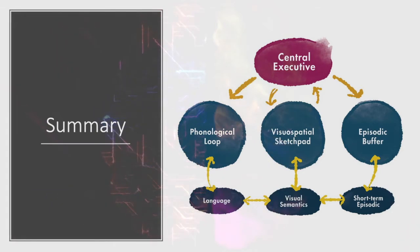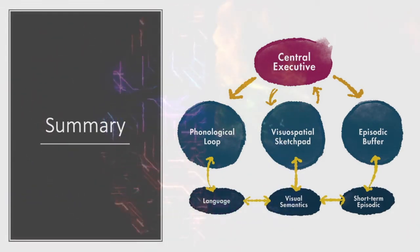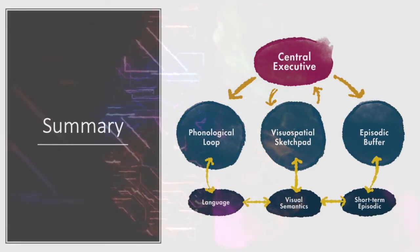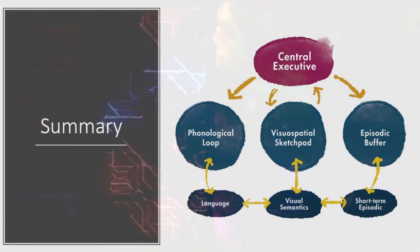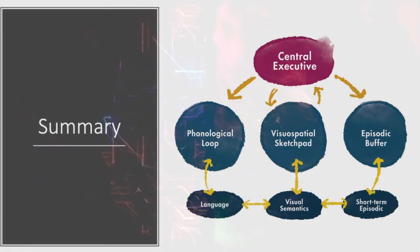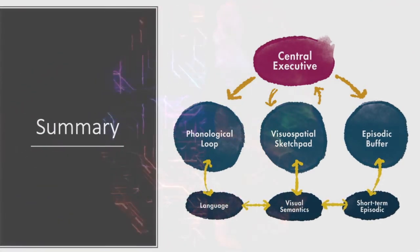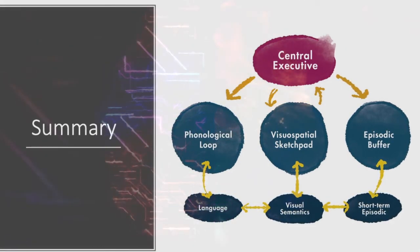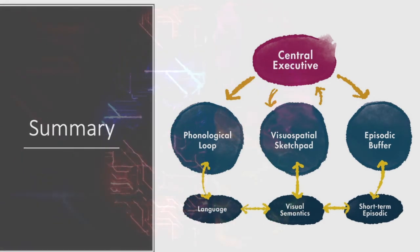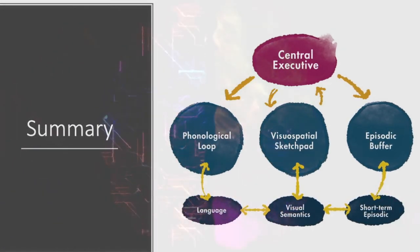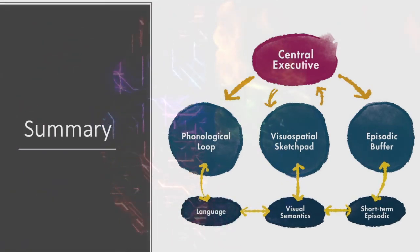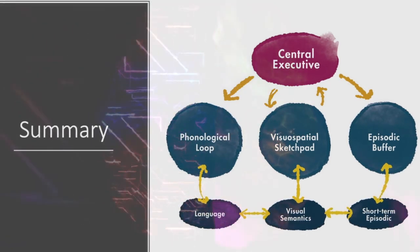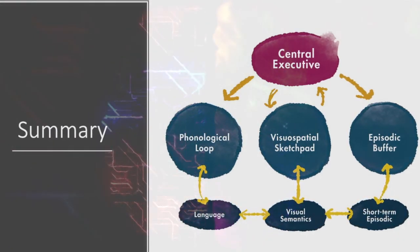In conclusion, we looked at working memory and the multi-store model of memory. We also looked at the central executive, including inhibition, shifting, and updating functions, the Stroop task, convention scheduling, supervisory attentional systems (SAS), and dysexecutive syndrome. We looked at the phonological loop, the phonological store, articulatory control processes, the phonological similarity effect, concurrent articulation, and the word length effect. Finally, we covered the visuospatial sketchpad, the visual cache, the inner scribe, the Corsi blocks task, the visual pattern task, and the episodic buffer.